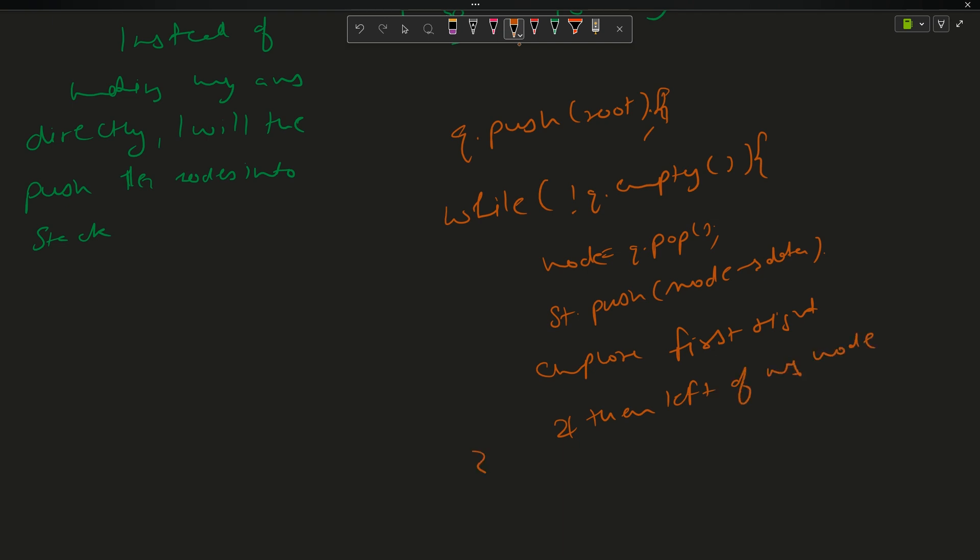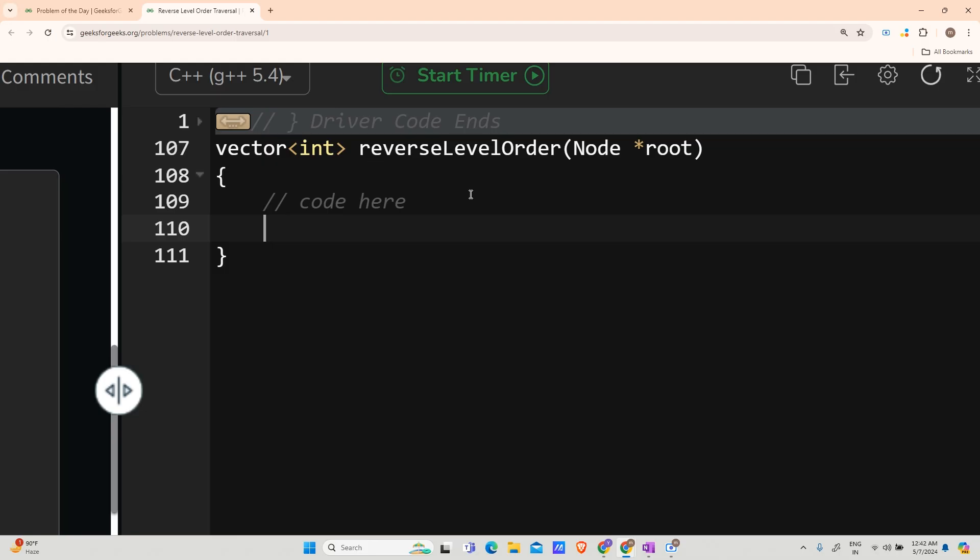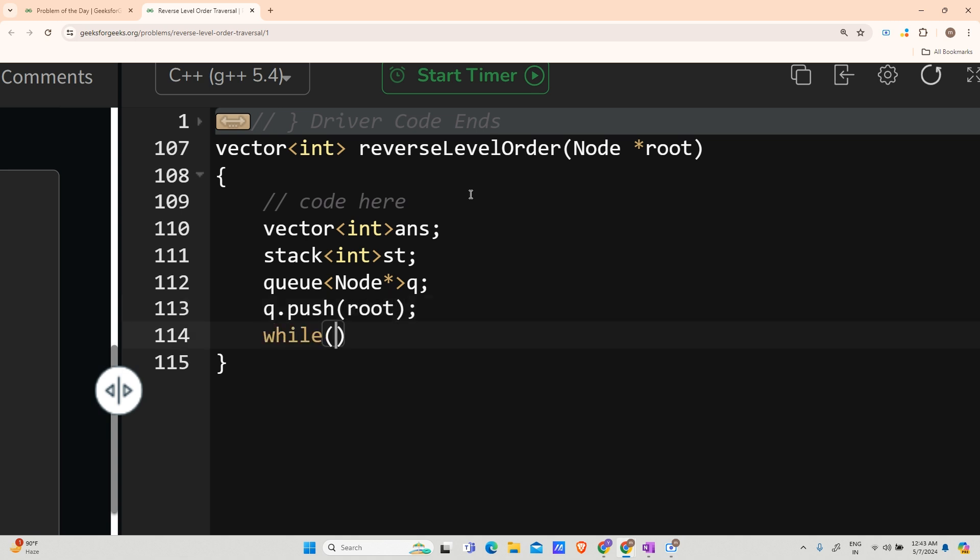That is the simple pseudocode. The question is easy so I am not wasting much more time of you. Let us move to the coding section right away. So here we are. My first step will be vector int answer. Second step will be stack of int st. And then queue of type node star q. Now queue dot push my root value. Now while my queue is not empty.